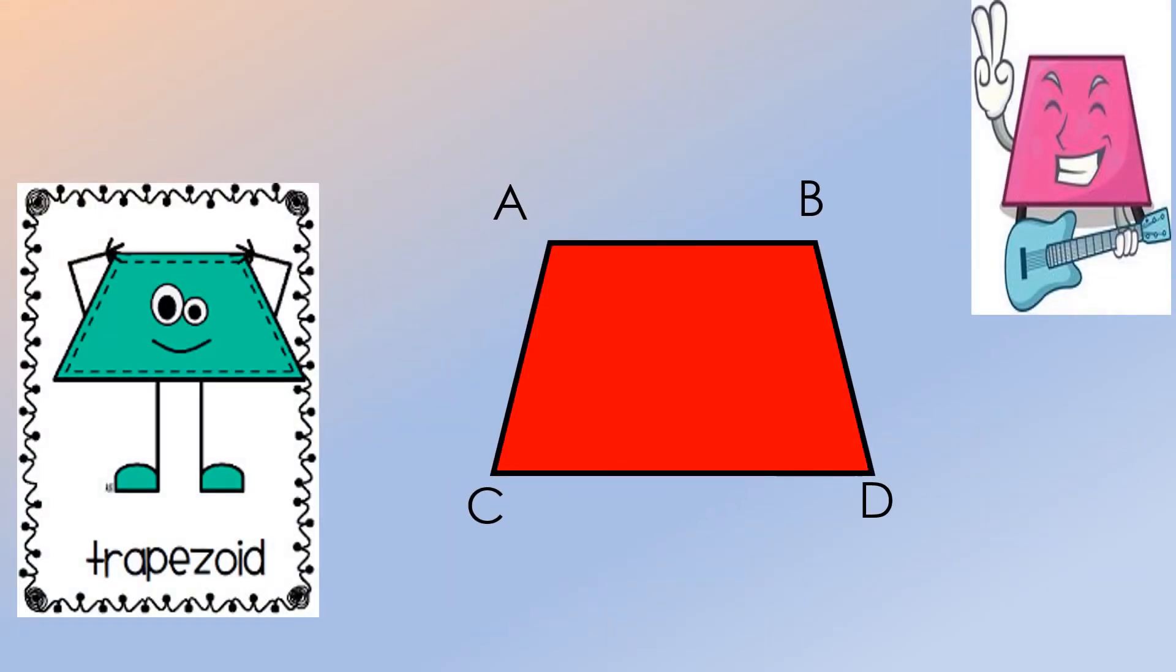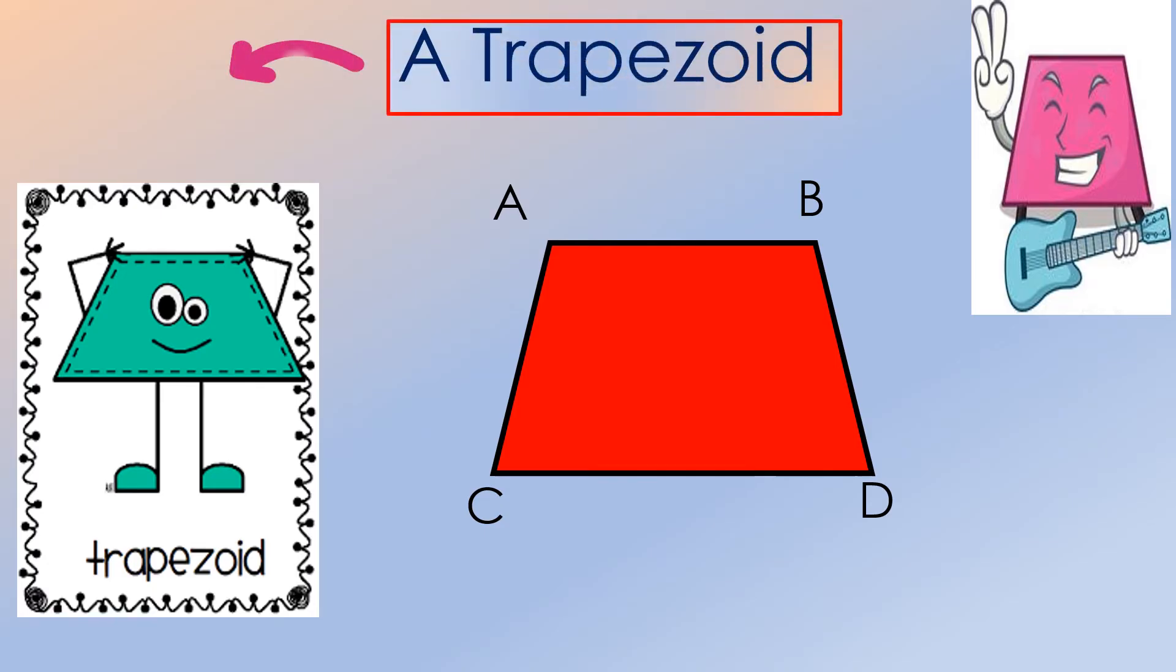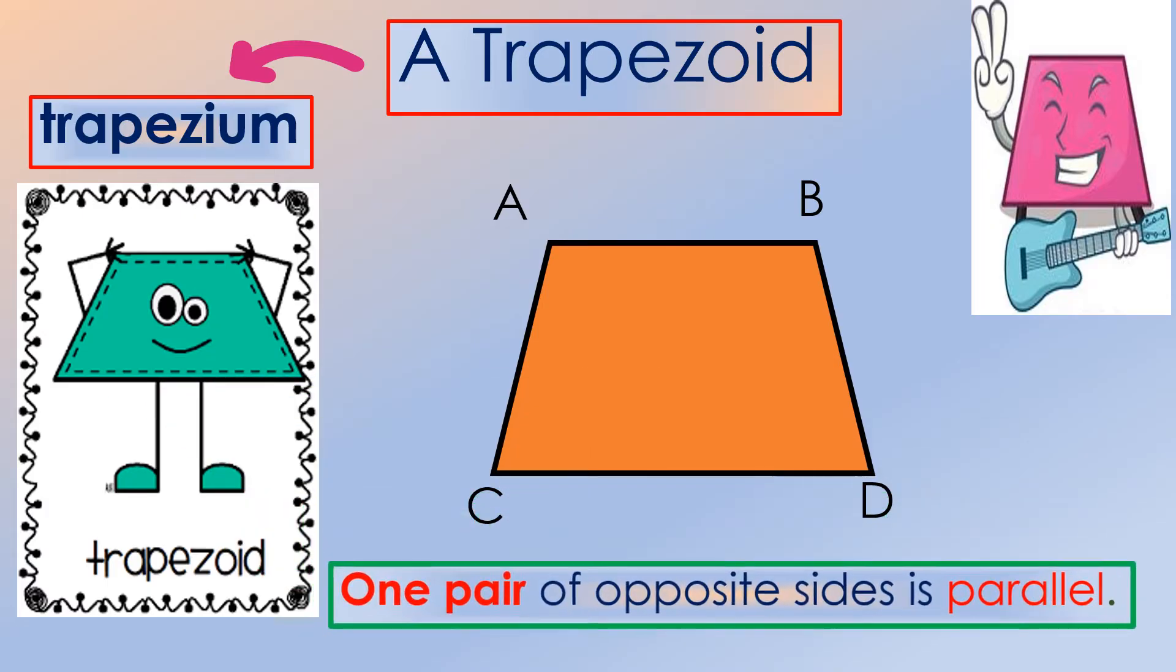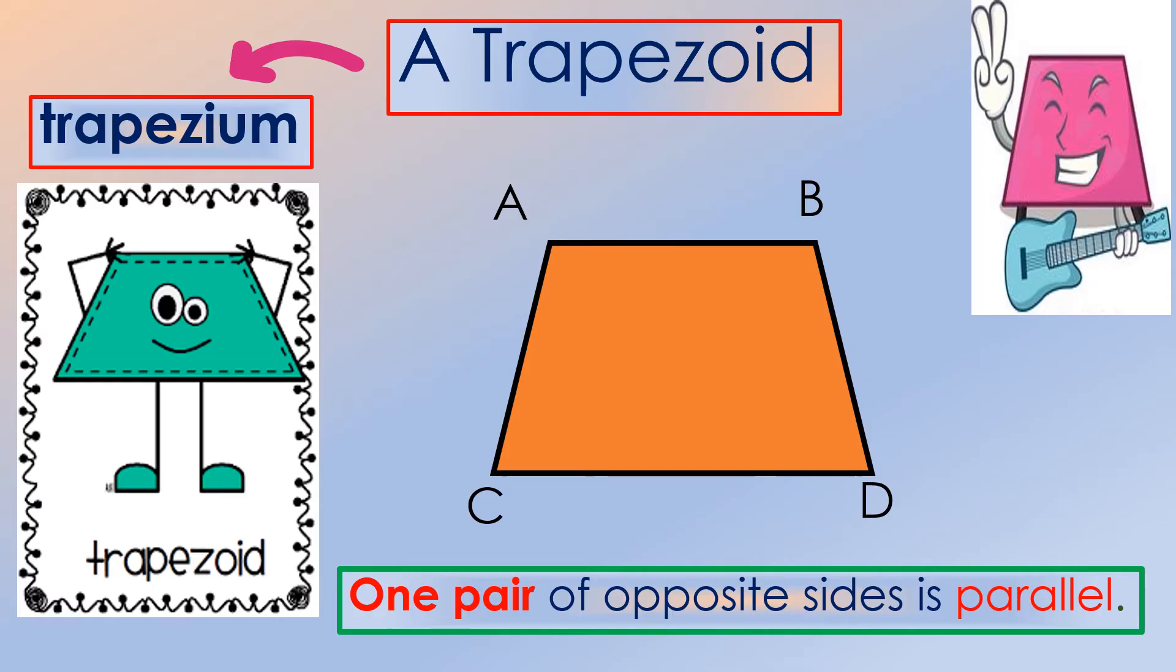Another type of a quadrilateral is the trapezoid, also known as trapezium. In this trapezoid, we can't find sides of the same length nor angles of the same size. But one thing that's clear is one pair of opposite sides is parallel. Can you guess which sides are parallel? Well then, in this figure, side AB is parallel to side CD.